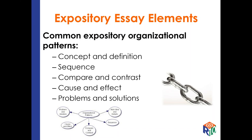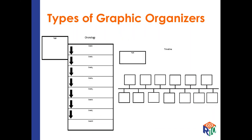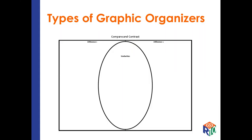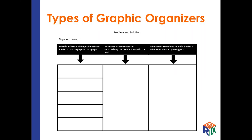For the next few slides, we will review the main types of graphic organizers used with expository text. Concept and definition generally describes a topic by listing characteristics, features, and examples. Sequence lists items or events in numerical or chronological order. Compare and contrast explains how two or more things are alike and/or different — you could also use a Venn diagram. Cause and effect lists one or more causes and the resulting effects. Problem and solution states a problem and lists one or more solutions, with a variation being the question and answer format.